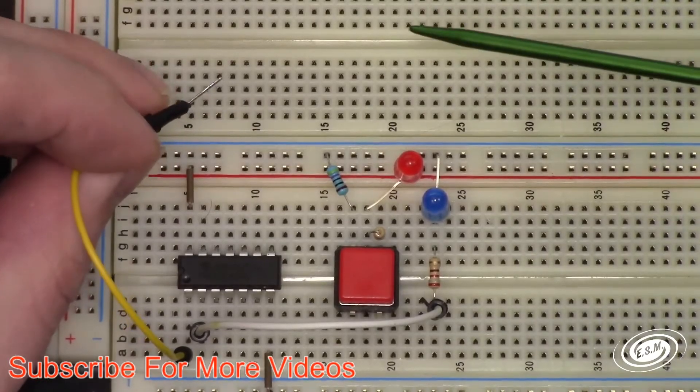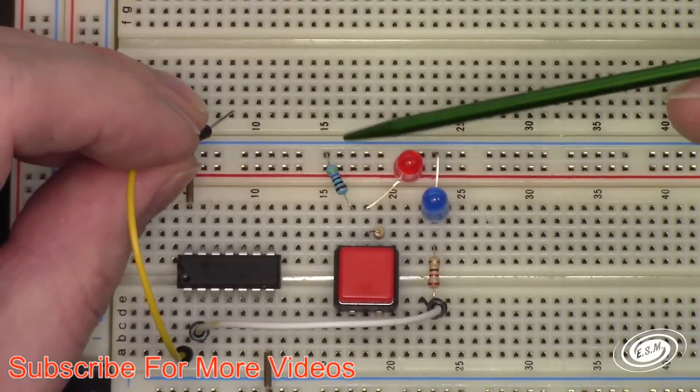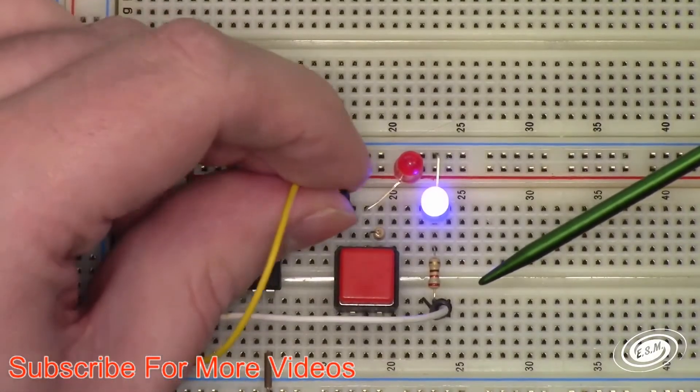It floats, it pulls it high. So in order to make this circuit work, you need to tie, you need to actually use pull-down resistors.